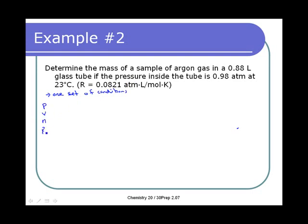We need pressure, volume, N, R, and T. Since we're looking for mass, we use the extended formula. Volume is 0.88 liters, pressure is 0.98 atmospheres. R for atmospheres is 0.0821. Temperature is 23°C, which we convert by adding 273.15, giving 296.15 Kelvins.